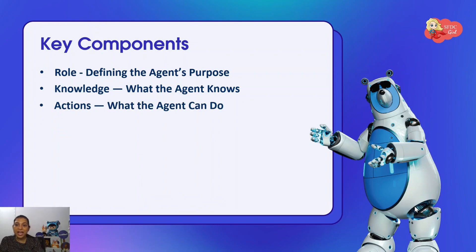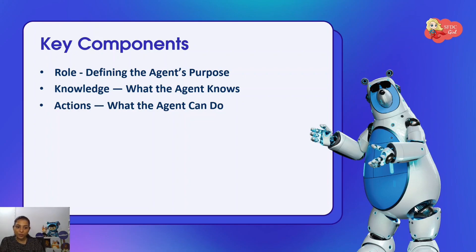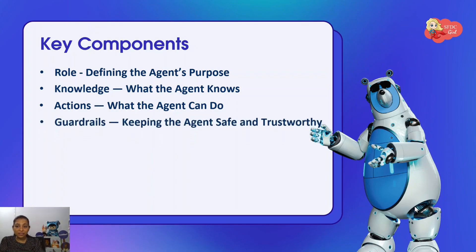The third key component — and a very important one — is Actions: what the agent can do. This is where things get exciting. Actions allow the agent to stop being reactive and do something actually useful. These are predefined executable tasks which can be flows, Apex, and external API calls. We can also use prompt templates to get cross-conversational responses. We'll talk about it more in our demos.